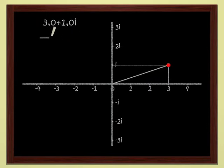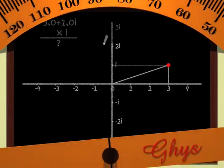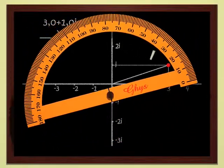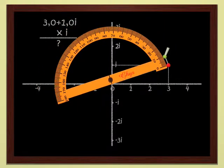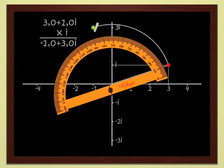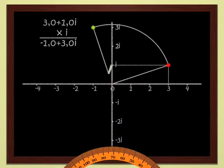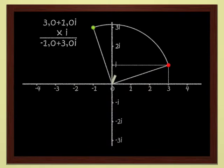Multiplying by i is not difficult either, since we know that i corresponds to a quarter turn. In order to multiply 3 plus i by i, we just have to rotate by a quarter turn. We get minus 1 plus 3i. Not so complicated, these complex numbers.